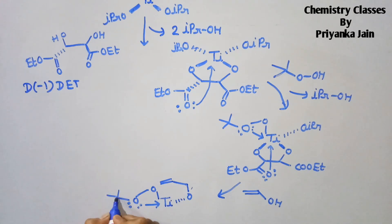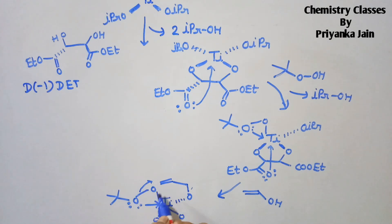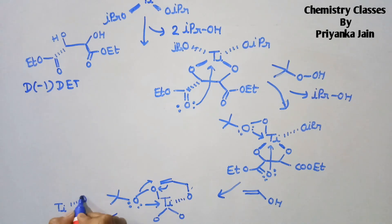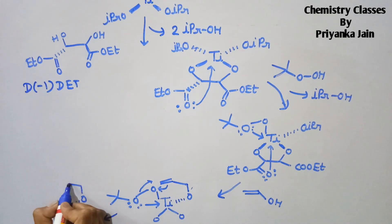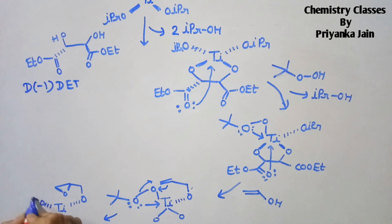The tertiary butyl group remains here and the rest of the structure stays as it is. The reaction now happens: this bond breaks, this bond breaks, and a new bond is formed between the oxygen and the double bond to create the epoxide ring. The ring is above the plane because our diethyl tartrate was (−).